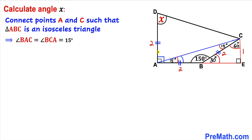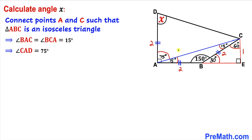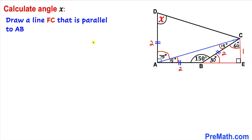We know angle BEA is 90 degrees and angle BAC (which is angle BAE plus EAC) gives us angle EAC. Since angle BAC is 15 degrees, angle EAC equals 90 minus 15 degrees, which is 75 degrees. Therefore angle CAD turns out to be 75 degrees.